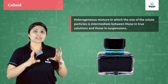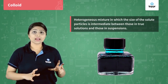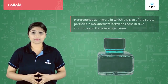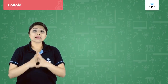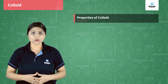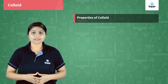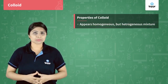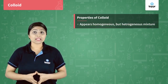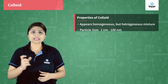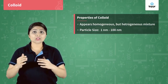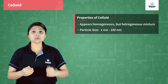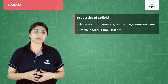The particles in a colloid are dispersed throughout the medium. Now let us see what are the properties of a colloid. The first property says that a colloid is a heterogeneous mixture. The second property says that particle size in a colloid is between 1 nanometer to 100 nanometers.